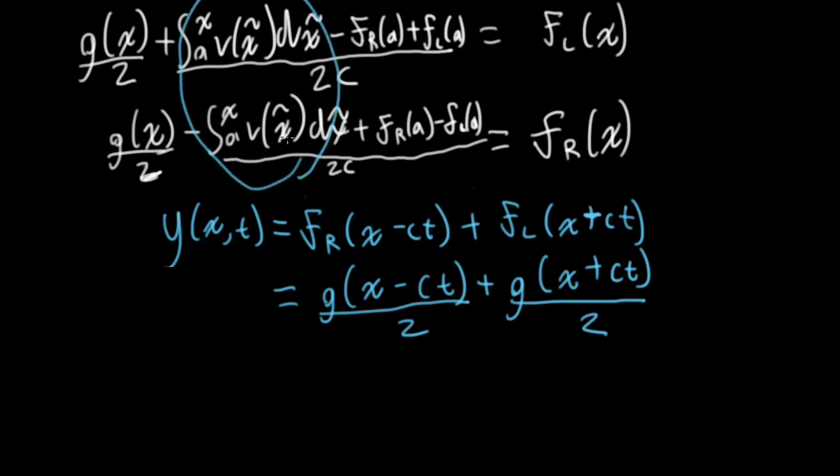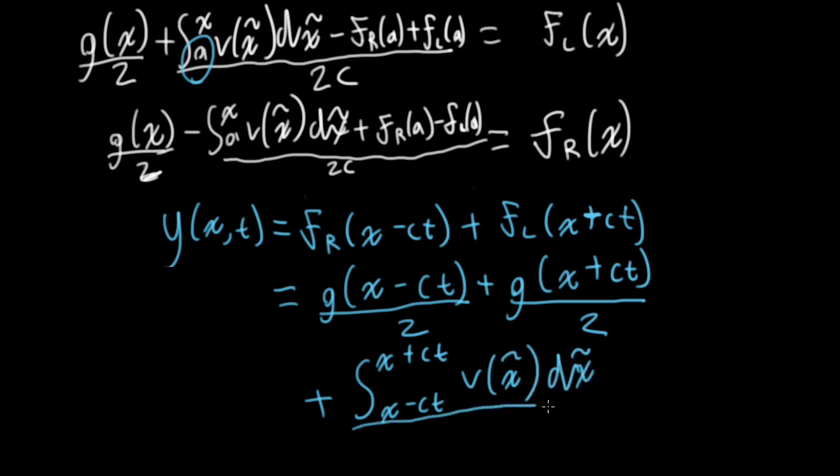So what about the integrals here? If we think about fl, we're going to be plugging in x plus ct. And if we think about fr, we're going to be plugging in x minus ct. And notice we're subtracting one integral from the other, where we're plugging in different x's, but we're keeping the lower limit the same. So I can actually combine this and write this as a single integral going from x minus ct to x plus ct integrating over vx. This whole thing divided by 2c. So here's a solution to the wave equation that doesn't involve any Fourier series expansions or anything like that. It's directly in terms of the initial conditions on the position and the velocity.